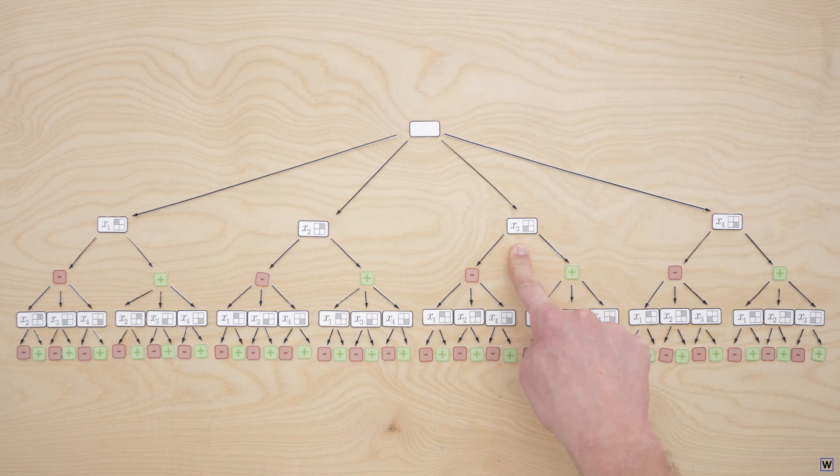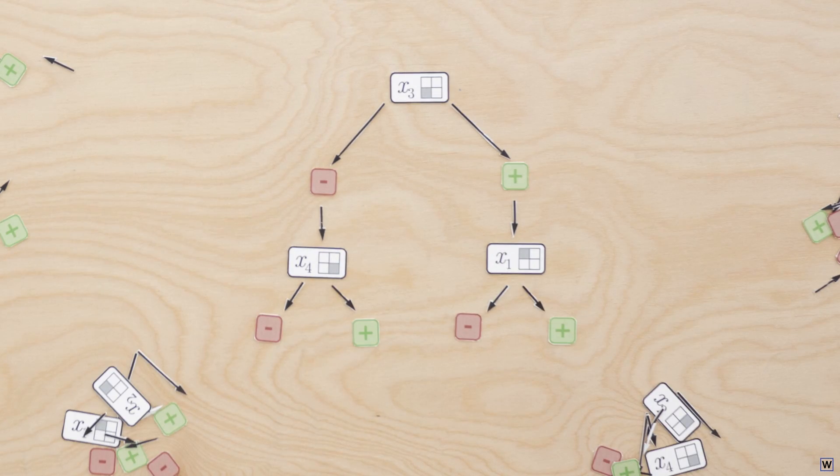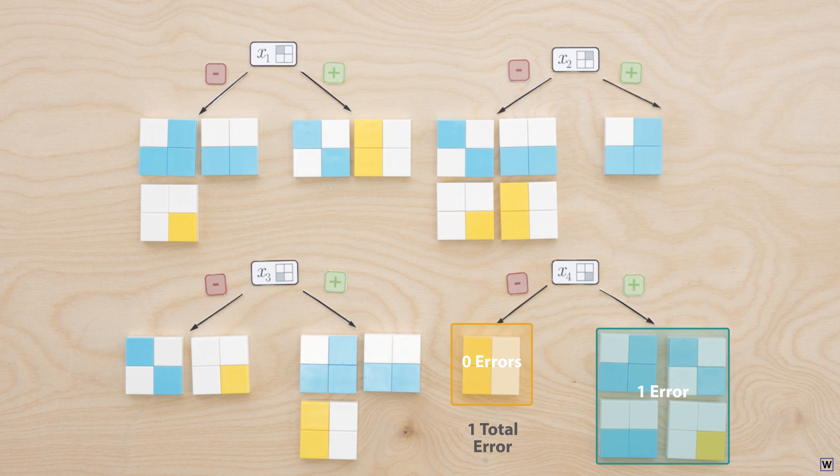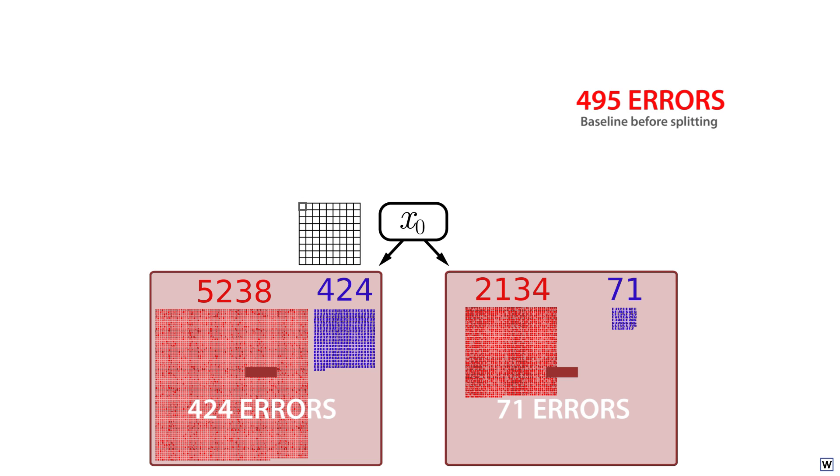But remember that our greedy approach demands that we search for the best tree one level at a time. And the metric we've chosen to guide our search is the number of misclassifications we make when branching each node of our tree. Any other labeling of our two nodes will result in more misclassifications. We must label both nodes negative.